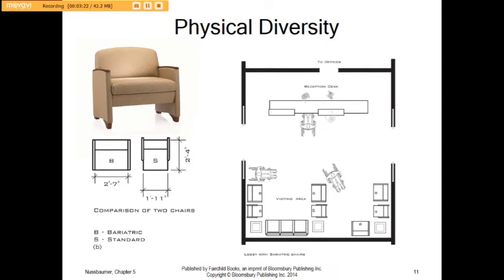Our physical diversity — we're all different sizes. As part of universal and inclusive design, when we incorporate bariatric furniture or furniture for the obese, we want to make it usable without a lot of difficulty.